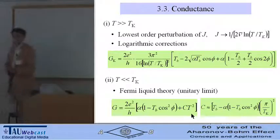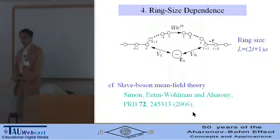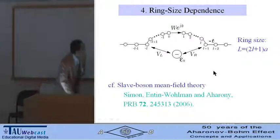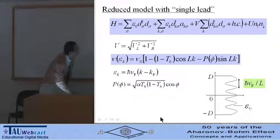Until now, I discussed the case of a small limit of Aharonov-Bohm ring. But we can extend our calculation to the case of finite ring size. We adopt this model. The ring size is denoted by capital L. Similar model has been examined using the slave-boson mean field theory by this group.